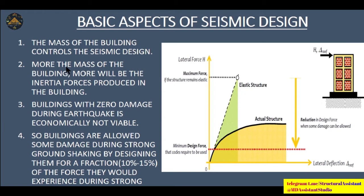Buildings are always designed as earthquake resistant, not earthquake proof, because earthquake proof buildings may be too uneconomical. Structural engineers allow some damage during strong ground shaking to release the earthquake forces. Buildings are designed for only a fraction of the forces — for example, if 100 kN force will be applied, codes instruct us to design for only 10 to 15 kN, and the rest 85 percent of forces may produce damage in the structure.